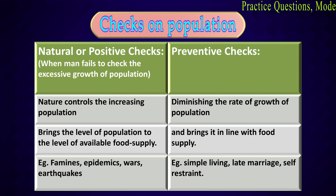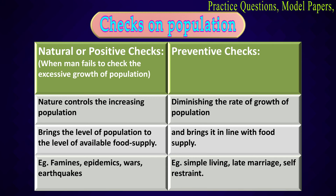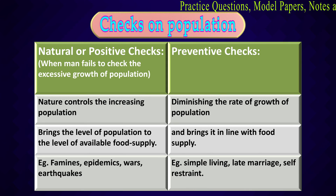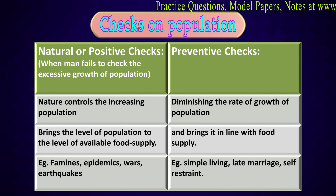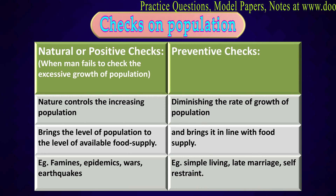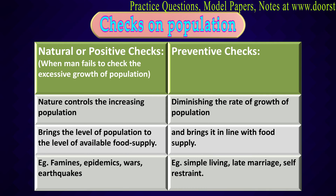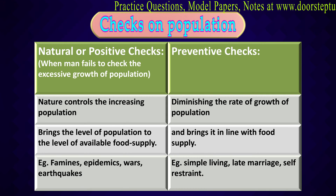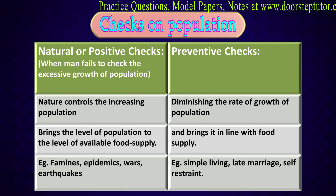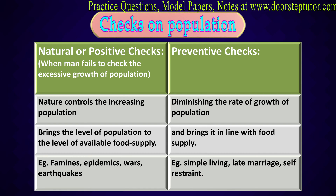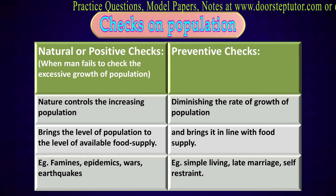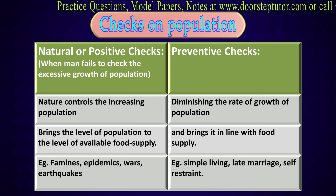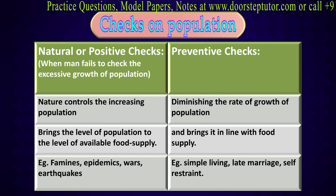When man fails, nature steps in and heals itself. For example, today in the times of COVID-19, when earth is healing itself and we are in lockdown because we could not manage the rising population and rising pollution. Nature took control of the increasing population. Natural checks can be in the form of epidemics, wars, and earthquakes. When these occur, the level of population and the availability of food supply come back into balance or equilibrium.